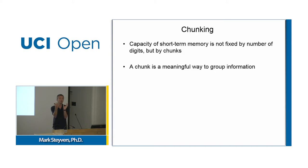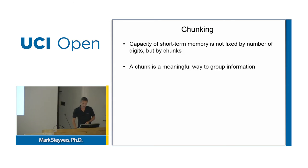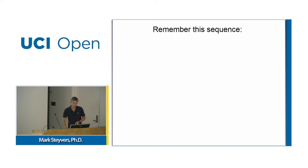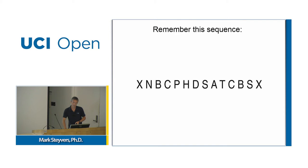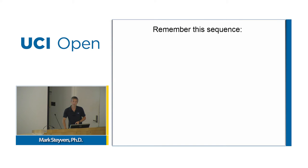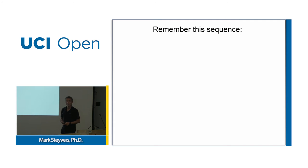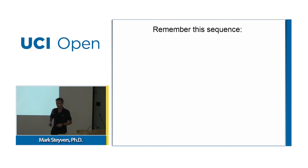That allowed him to get a much larger digit span than at the beginning. This process of grouping items in terms of meaningful units is called chunking. When George Miller says you have seven slots, you essentially have seven chunks of information available, where each chunk is whatever is meaningful to you — whatever way you group information together. To test this, I'm going to show you a sequence of letters for about five seconds and you have to remember it.